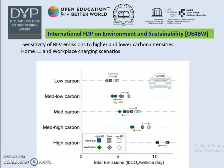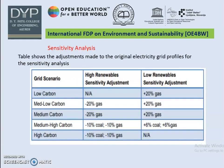We have to find out the sustainability or the sensitivity of BEV emissions which are related to higher and lower carbon intensities. This table shows the adjustments made to the original electricity grid profiles for the sensitivity analysis — high renewable sensitivity adjustment and low renewable sensitivity adjustment for different grid scenarios, consisting of low carbon, medium low carbon, medium carbon, medium high carbon, and high carbon. The low renewable sensitivity adjustment is not applicable for the high carbon grid scenario.